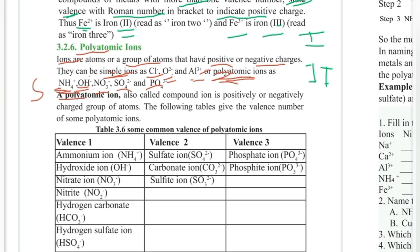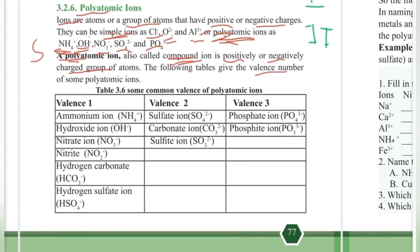These are polyatomic ions, also called compound ions. A compound ion is a positively or negatively charged group of atoms. The following table gives the valency numbers of polyatomic ions.